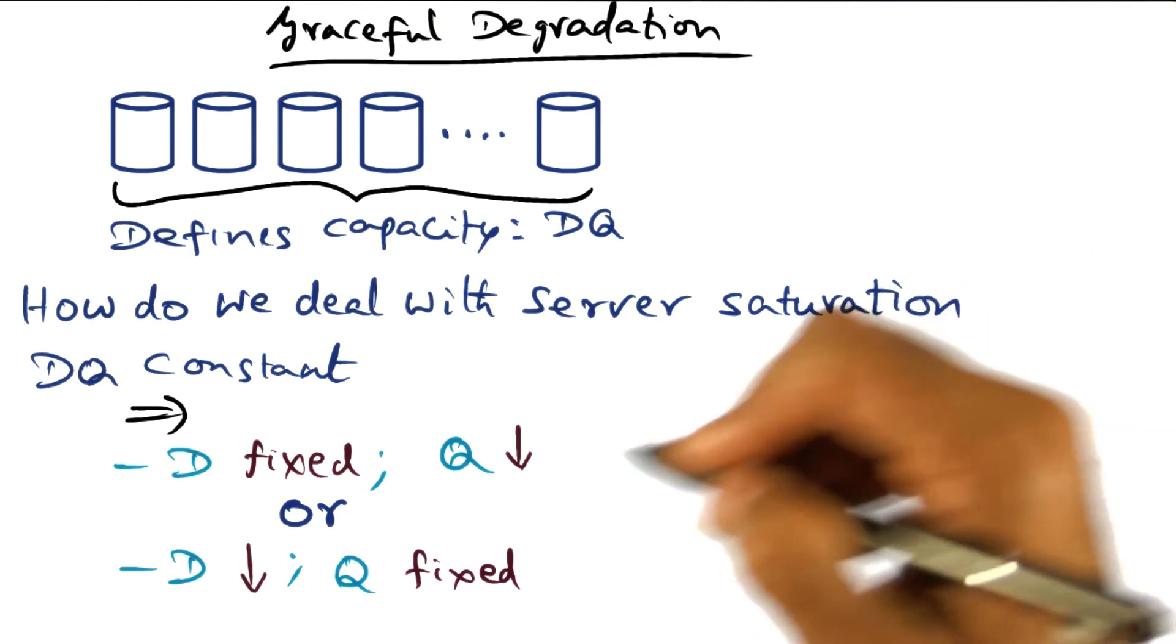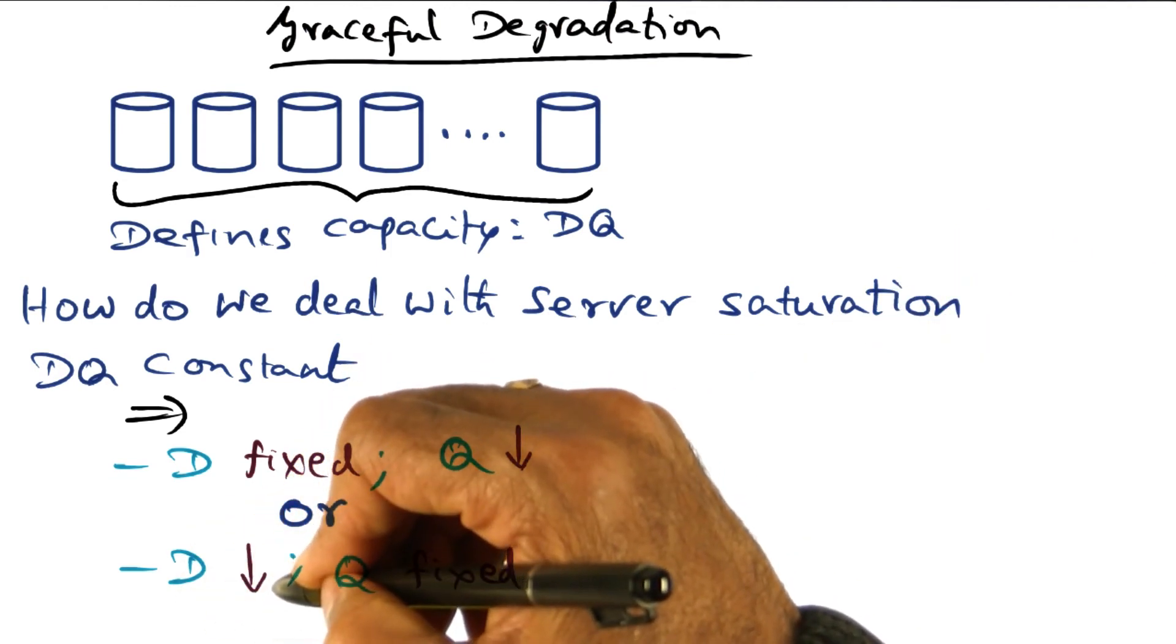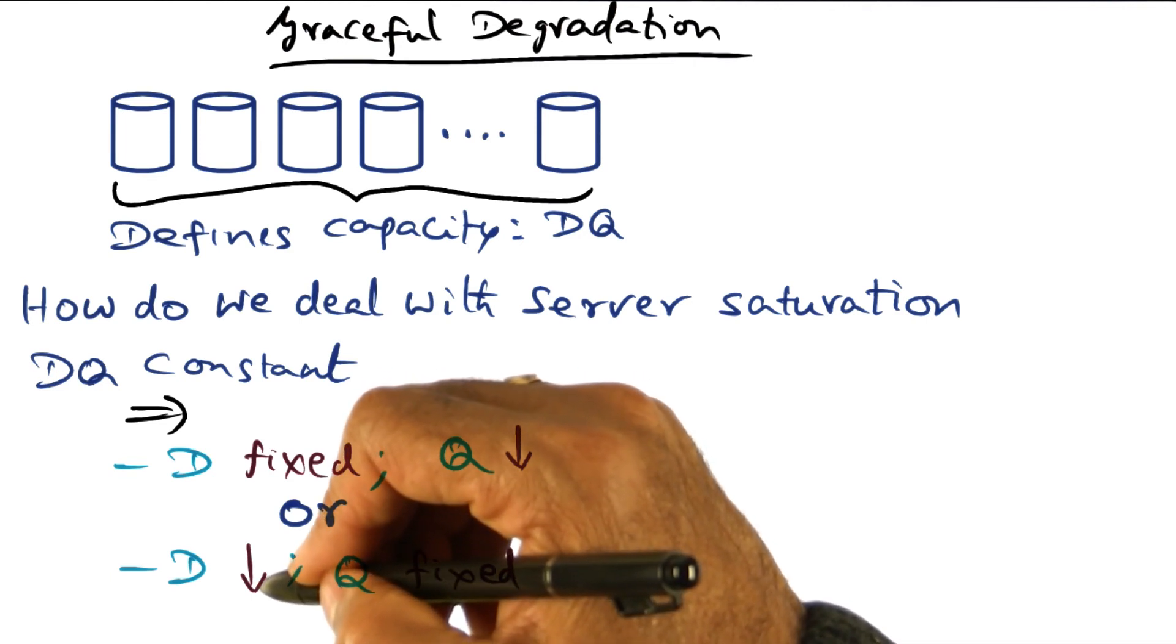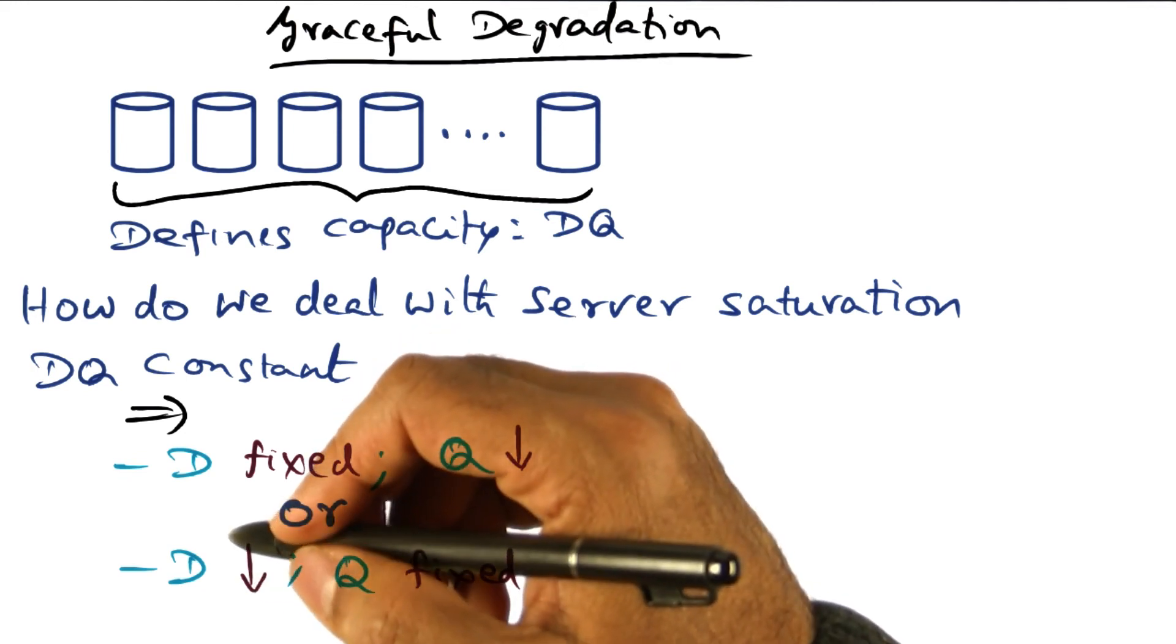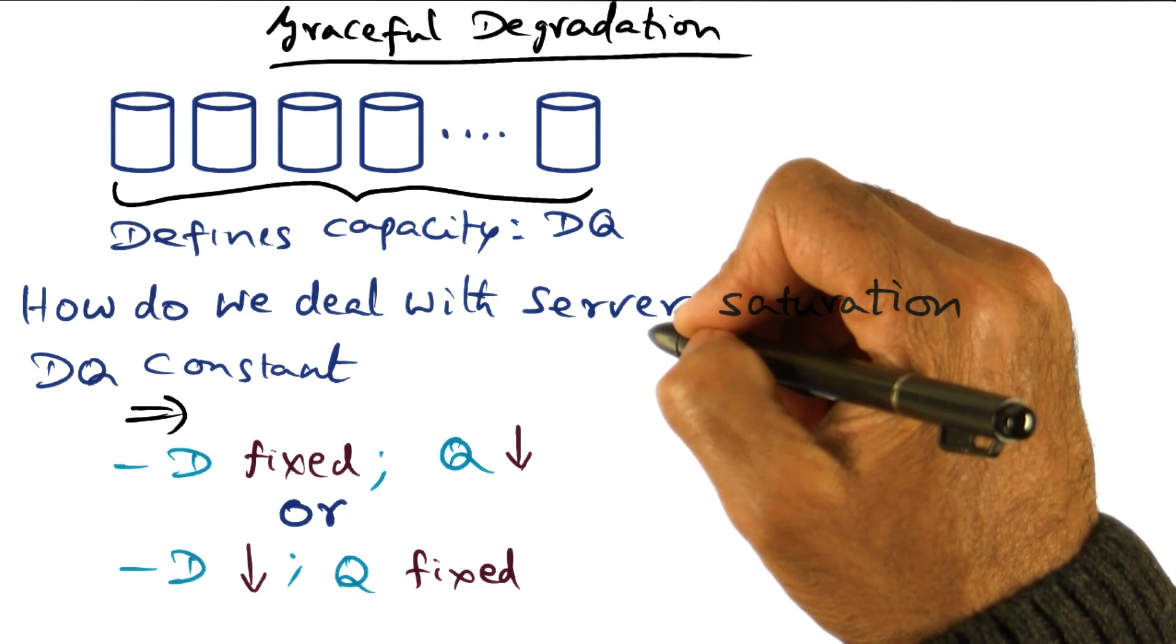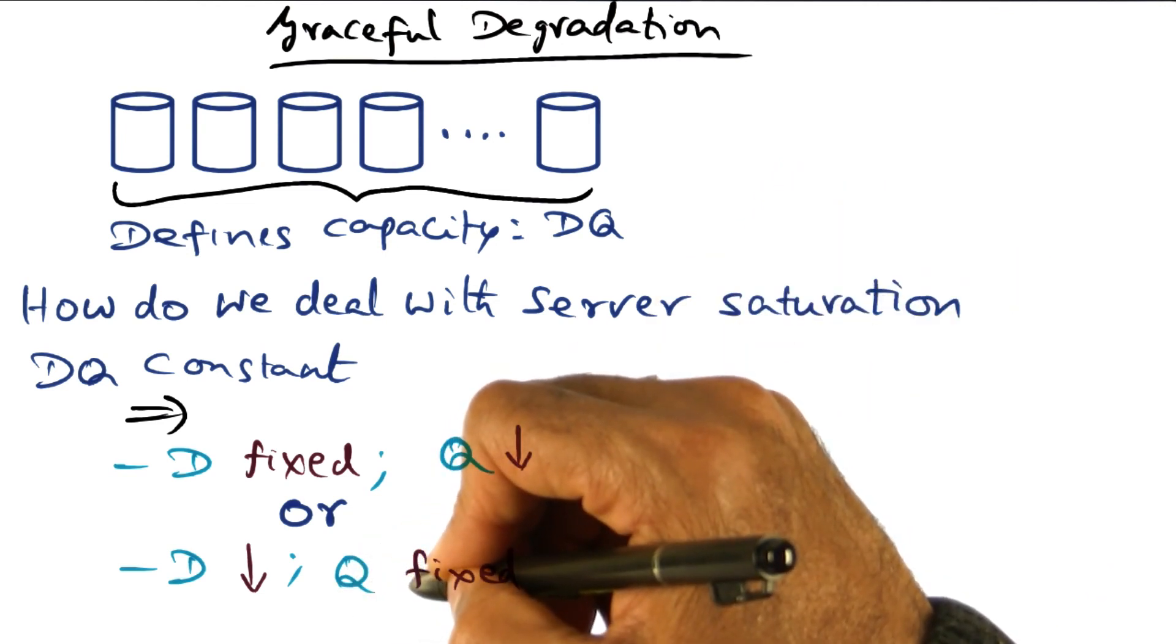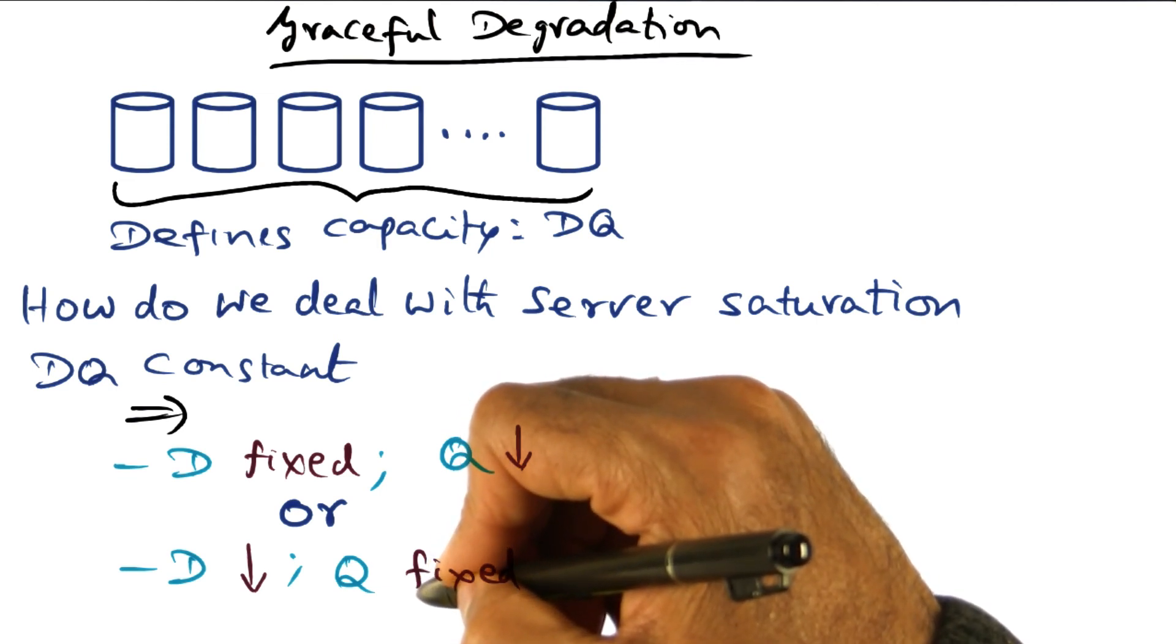Or reduce data freshness. That is, the harvest may be the same, but you reduce the fidelity of the data. For instance, if I'm serving videos and I can serve the videos at different bit rates, if the server is saturated, I might decide to serve the video to all the users, all the videos that they want, but at a lower bit rate. So that is reducing the fidelity of the data that is being harvested.